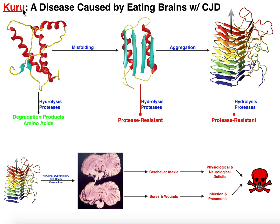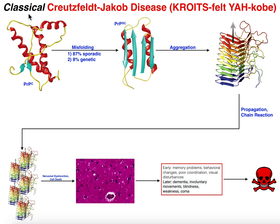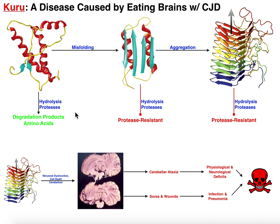Kuru has some similarities to classical Creutzfeldt-Jakob disease. In fact, it's hypothesized that Kuru actually originated from this disease — classical CJD, which we talked about in the previous video. We're going to see a little bit of overlap with that, except for one major difference.